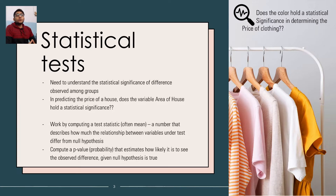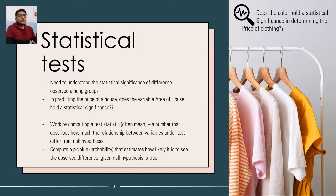When do we use statistical tests? We need to understand the statistical significance of the difference observed between various groups with respect to the impact on the response variable. For example, in predicting the price of a house, does the variable 'area of house' hold a statistical significance? Or does color hold statistical significance in determining the price of clothing? We use statistical tests because we collect a sample from the entire population — collecting the entire population could be computationally very expensive and the associated cost would be very high.